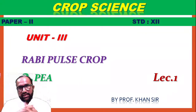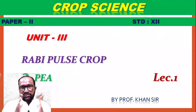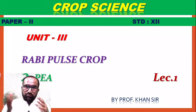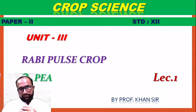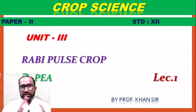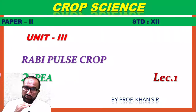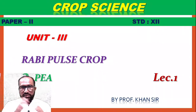Along with gram crop cultivation, we are studying simultaneously. For Crop Science along with Agriculture Science and Technology, we covered the gram crop separately. Now we start Rabbi Pulse Crop from Agriculture Science and Technology, Paper Second.